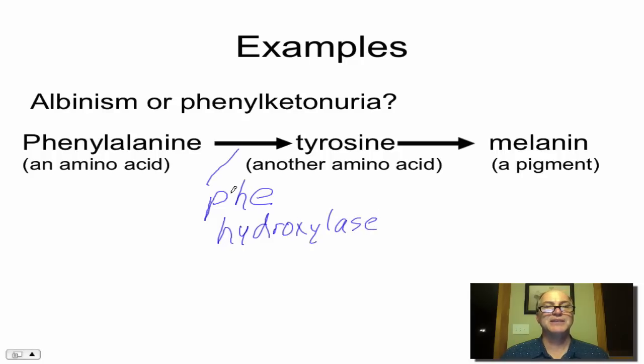And in essence, what this enzyme does is it takes phenylalanine and it adds onto it a bond to a hydroxyl group, which is an O bonded to an H, and that simple bonding of the hydroxyl group makes tyrosine. Once you have the amino acid tyrosine, a different enzyme over here can convert tyrosine into melanin. And that one, since tyrosine is the substrate, is called tyrosinase.